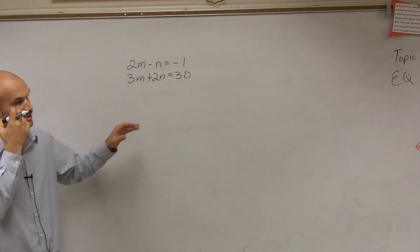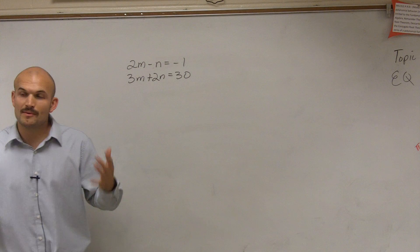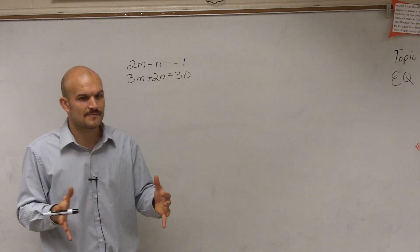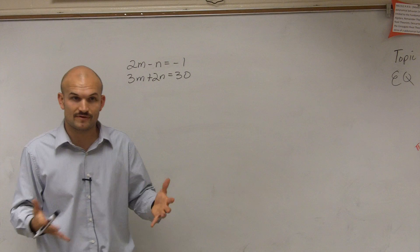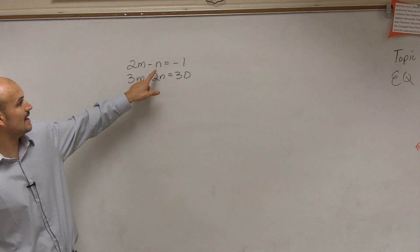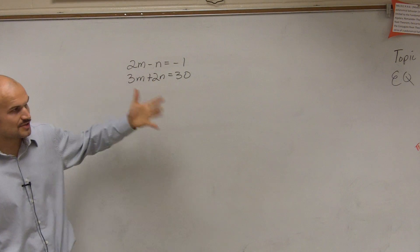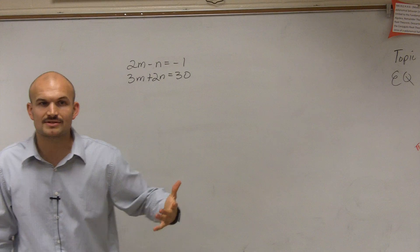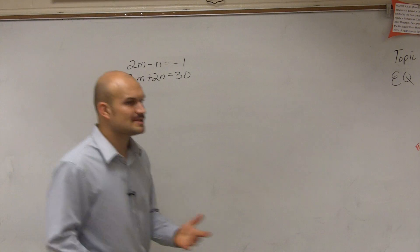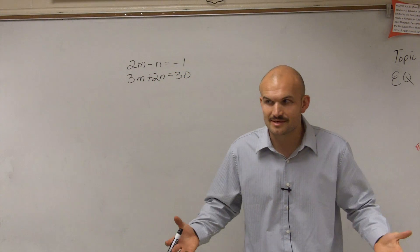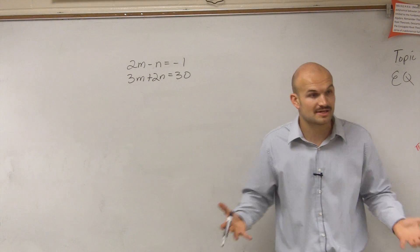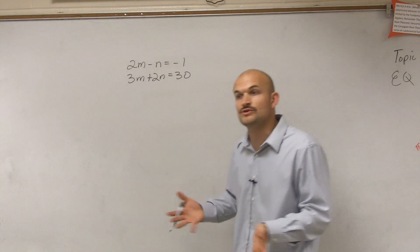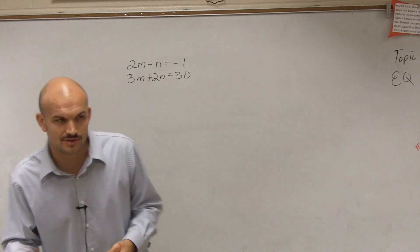The next thing we looked at was using substitution. Remember, the main point for substitution was finding a variable that had a one or a negative one as its coefficient. We do have a negative one as a coefficient of n, so this could be easily solved by substitution. However, we can actually use elimination. Elimination is another technique that we can use rather than always doing substitution.